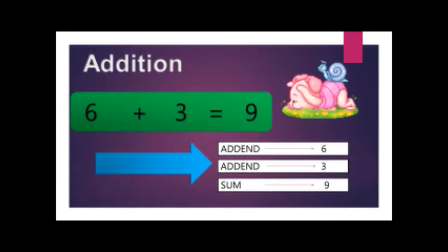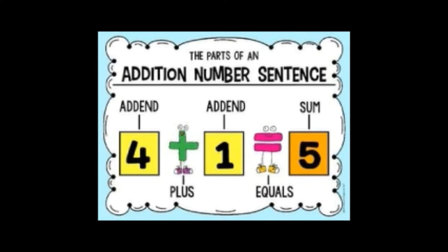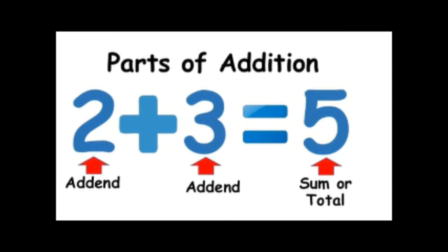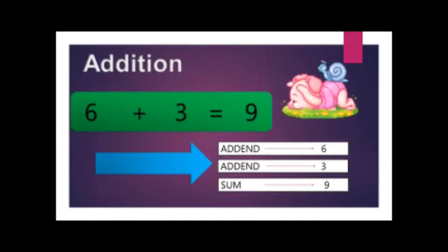Here we have another example. The first addend or upper addend is four, the symbol is plus, and we have the second addend or lower addend that is one, with the equals symbol, and the answer — we call it sum — that is five. One more example: upper addend is two, lower addend is three, and the answer five we call it sum or total.